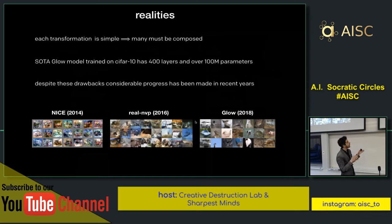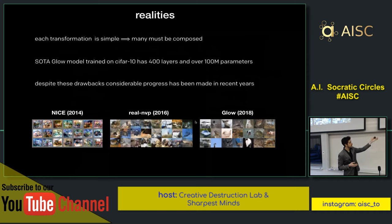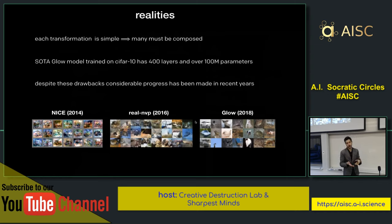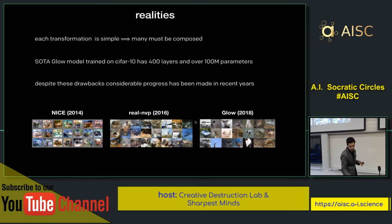Despite the computational intensity, we've seen considerable progress on these models — from NICE in 2014, to RealNVP in 2016, to GLOW in 2018. With GLOW, samples are starting to resemble those from a GAN. The cool thing about these models is that we can exactly compute the likelihoods of our data and sample from them, which we cannot do with variational autoencoders or GANs — making them nicer theoretically and free from the known problems of GANs.